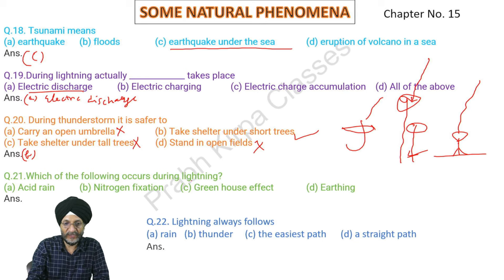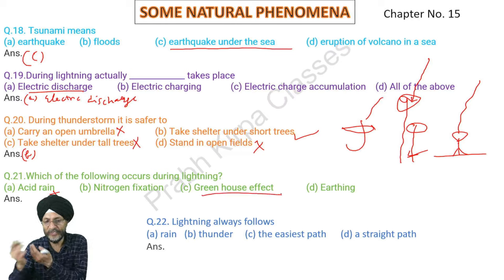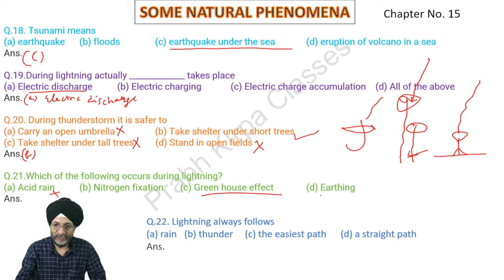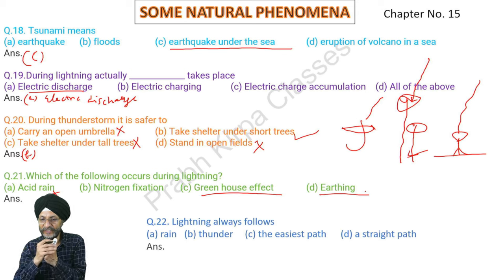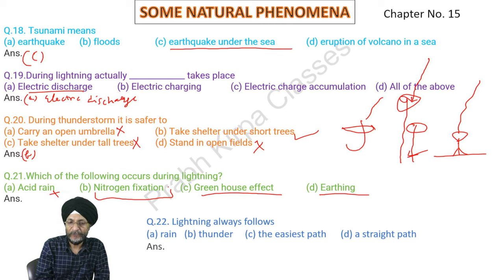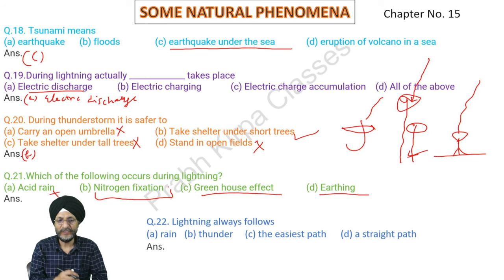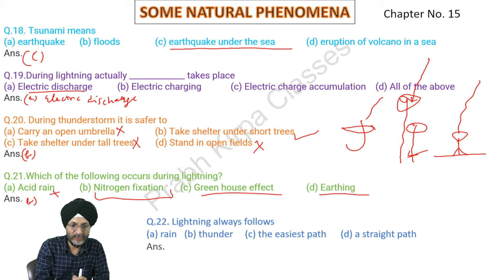Which of the following occurs during lightning? Acid rain occurs at the time of rain due to accumulation of acid in the air because of air pollution. Greenhouse effect occurs due to greenhouse gases accumulating in the atmosphere. Earthing is a process by which electric discharge takes place from a charged body to the earth. Most nitrogen fixation is done by plants, but some — only a small percentage — is done by lightning. So our answer is lightning causes nitrogen fixation.